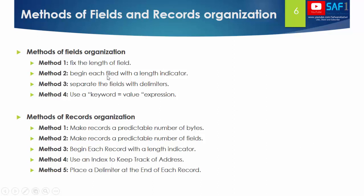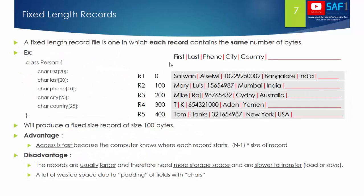From these two organizations, we are interested in fixed length and variable length records. A fixed length record file is a file in which each record contains the same number of bytes.